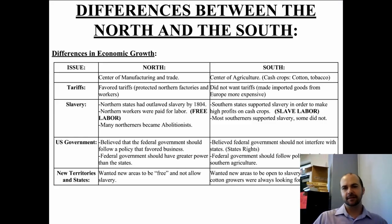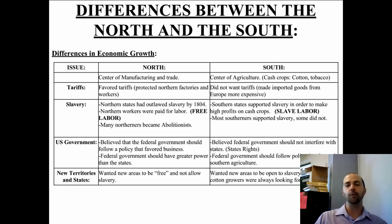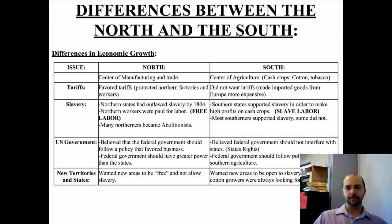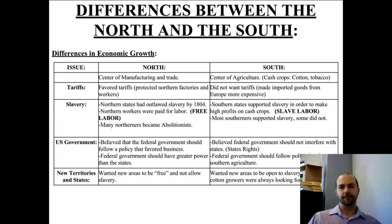Take a look at this table in your packet. It compares the North and the South on four different issues: tariffs, slavery, the U.S. government, and new territories and states. The North and South are on totally opposite ends of the spectrum. The North believes in federal government power, while the South believes in states' rights. Looking back, the only way to solve this was war, though both sides tried to prevent it as much as possible.